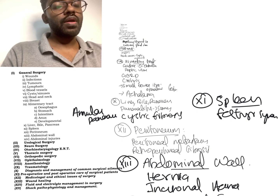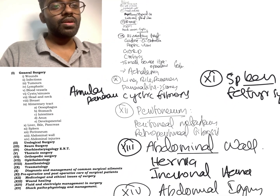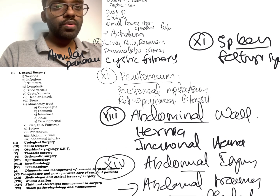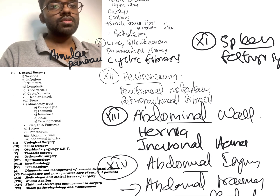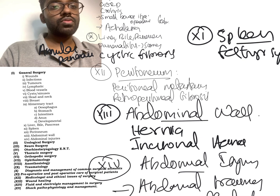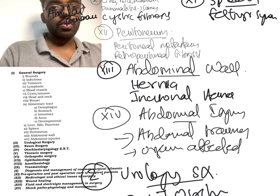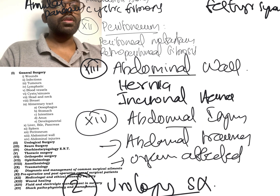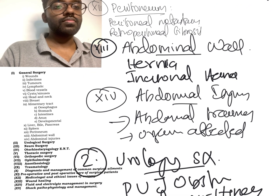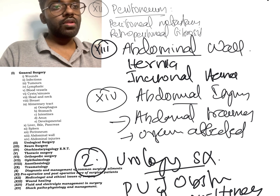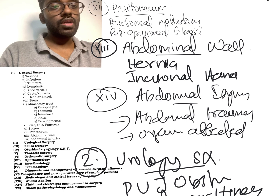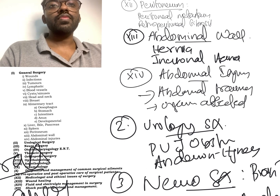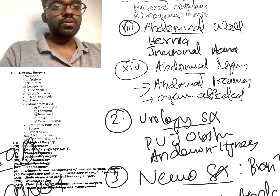From the eleventh topic, spleen, they asked about Felty's syndrome and trauma to the spleen. Questions can be combined with other topics, so be ready. From peritoneum — topic twelve — they asked about peritoneal metastasis and retroperitoneal fibrosis. Abdominal wall topics remain consistent — hernia is always asked, and this time they asked specifically about incisional hernia. The last topic in general surgery, abdominal injuries, included questions on abdominal trauma and unusual organs affected in different types of injuries.